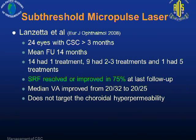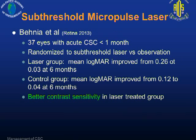Another study showed it is useful in some patients with chronic CSC, though results were only moderately good, with only about 75% having resolved or improved fluid at last follow-up. A more recent paper published last month randomized patients to subthreshold laser versus observation in acute CSC of less than one month. Both groups improved in vision with no significant difference in visual gain, but there was better contrast sensitivity in the laser-treated group.